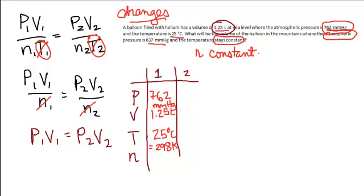What will be the volume? There is our question word. What will be the volume? So, V2 is the one we're looking for, where the atmospheric pressure is 637 millimeters of mercury. So, P2 is 637 millimeters of mercury, and the temperature stays constant, so that's going to be 25 degrees Celsius. My number of moles is constant. These guys end up canceling, and there are my pressure and volume units.